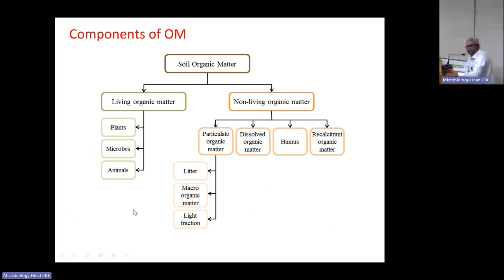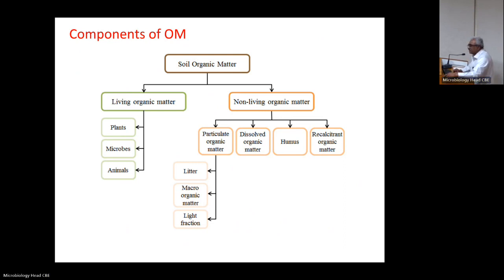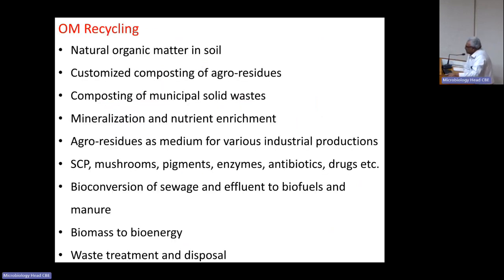Organic matter is very diverse and occurs predominantly in soil. Whatever biomass falls ultimately ends up in soil. In soil, we have both living and non-living organic matter. Living organic matter includes plants, animals, microbes, insects, and rodents. Under non-living organic matter, we have particulate organic matter such as litter, macro-organic matter, and magnetic fractions, as well as dissolved organic matter, humus, and specific organic matter. We can classify this organic matter in various ways depending on scientific knowledge. Natural organic matter decomposition occurs in soil without the intervention of humans, naturally done by microorganisms in different stages.